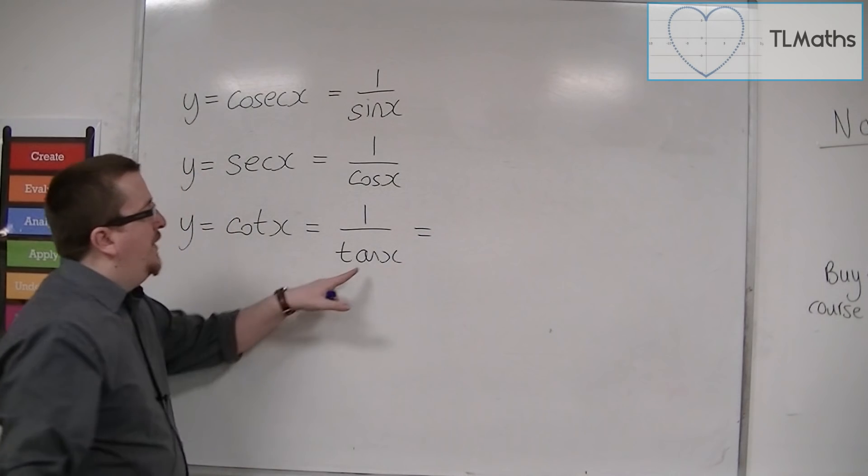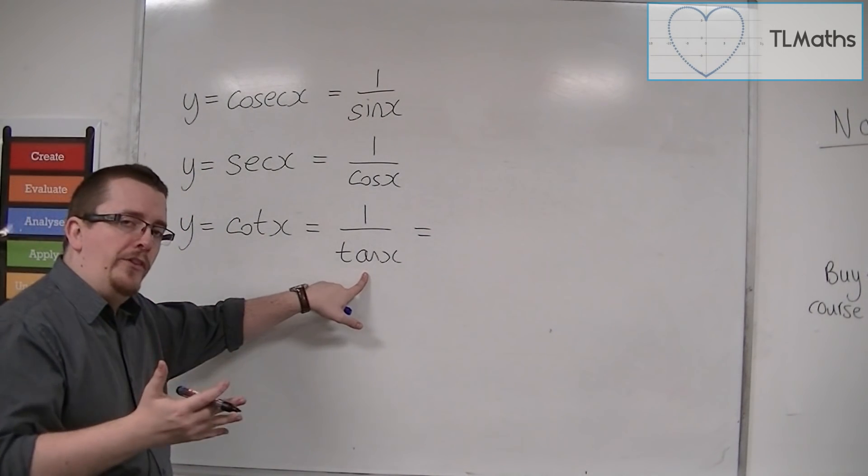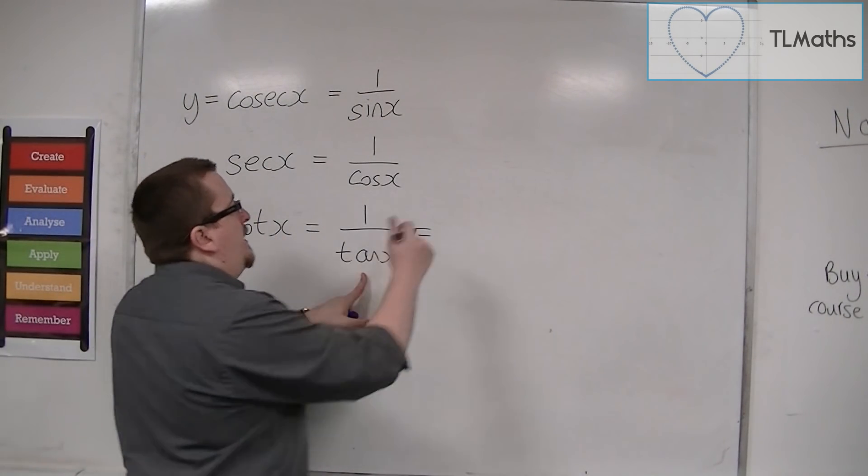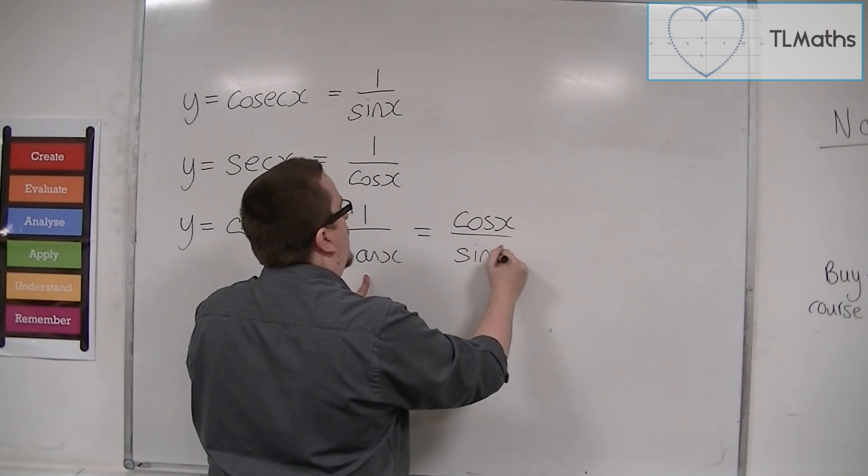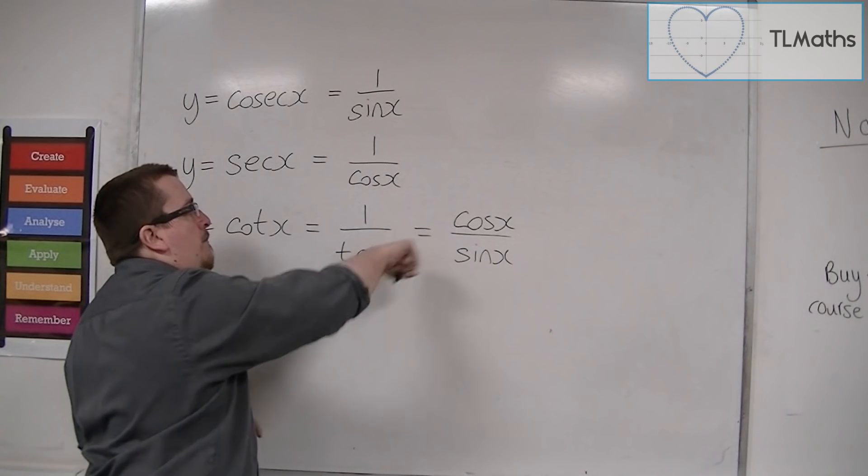Which, as we know that tan x is sine x over cos x, 1 over tan is cos over sine. And it's important that you remember both of those.